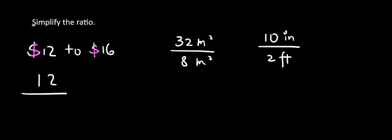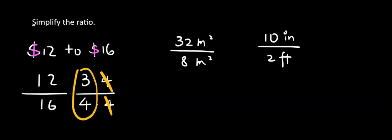We say 12 to 16. 12 is 3 times 4. 16 is 4 times 4. And 4 divided by 4, that is 1. And we have 3 to 4 left.